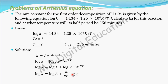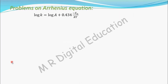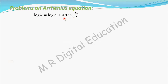Log e to the base 10 — you need to calculate this. The value of e is 2.718, and log of 2.718 to the base 10, from the logarithm table, equals 0.434. So the equation becomes: log K = log A − 0.434 × Ea/RT.